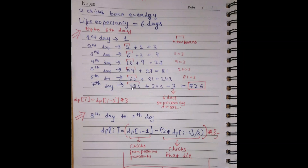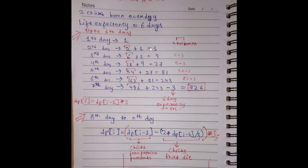On the seventh day, the 243 give birth to 486 children. Plus the 243 parents — but since the life expectancy of each chick is six days, the chicks born on the second day (which totaled 3) will die. So 486 plus 243 minus 3 equals 726 chicks on the seventh day.